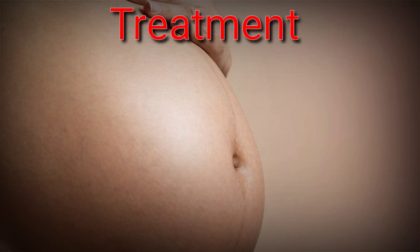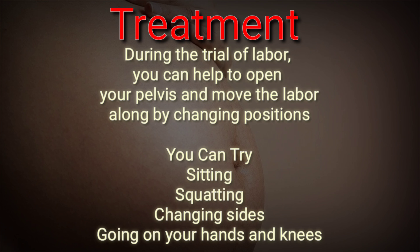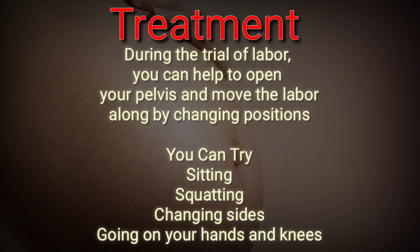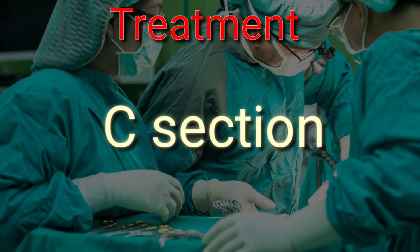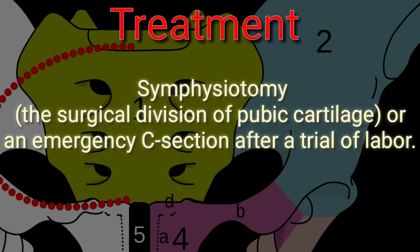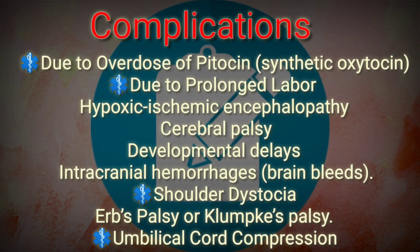During the trial of labor, you can help to open your pelvis and move the labor along by changing position with the help of your nurse, doula, or partner. You can try sitting, squatting, changing sides, going on your hands and knees, etc. If CPD is severe and diagnosed early, a planned cesarean section is indicated. In other cases, CPD may be treated with symphysiotomy — that is, surgical division of the pubic cartilage — or an emergency cesarean section after a trial of labor.